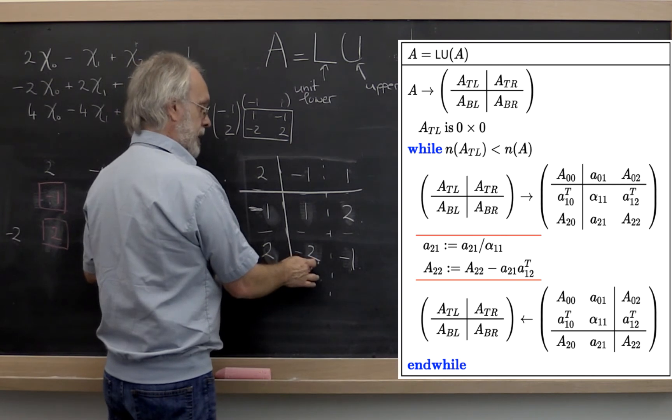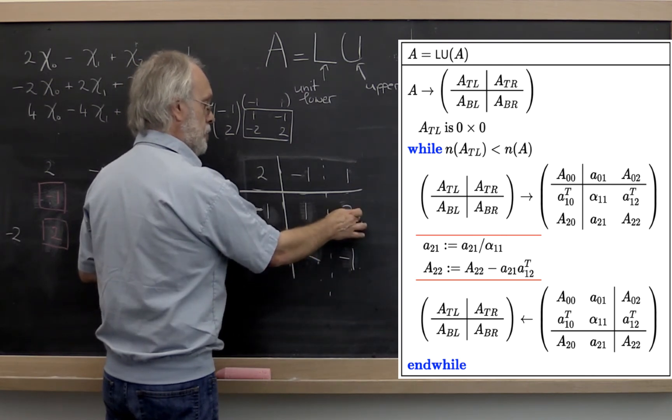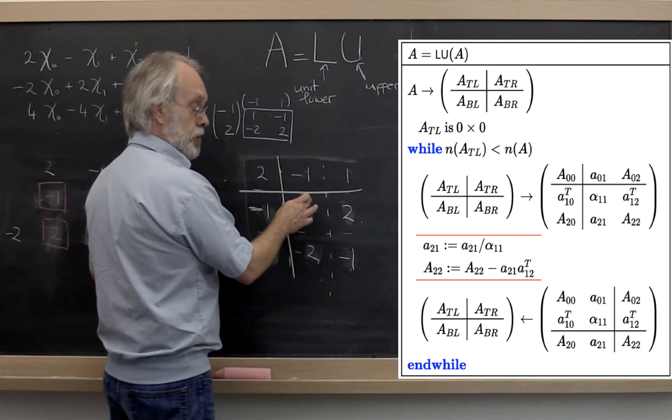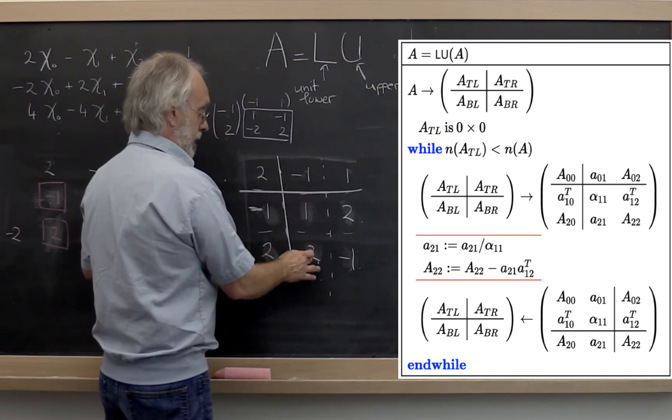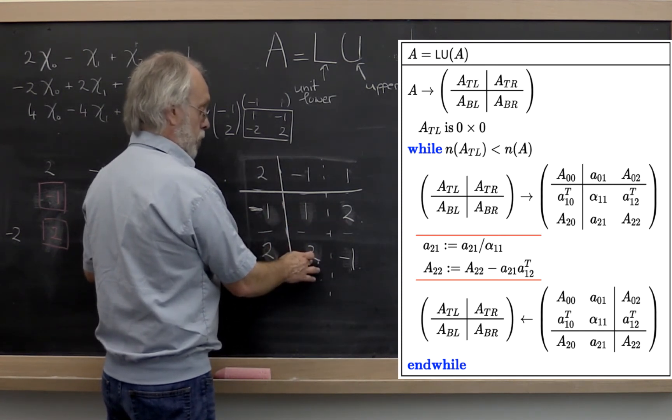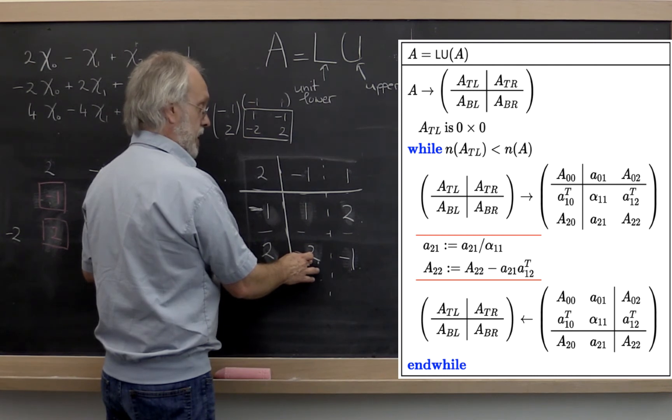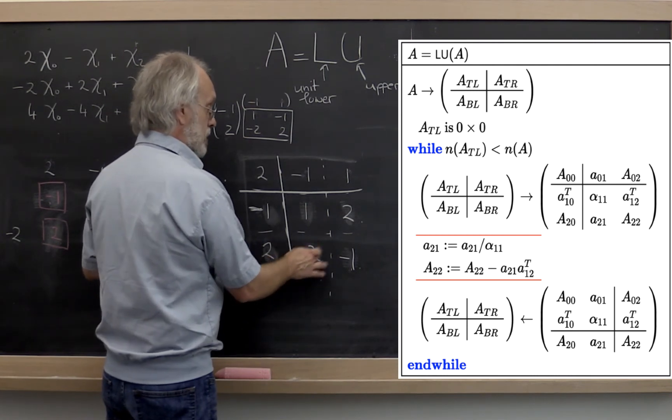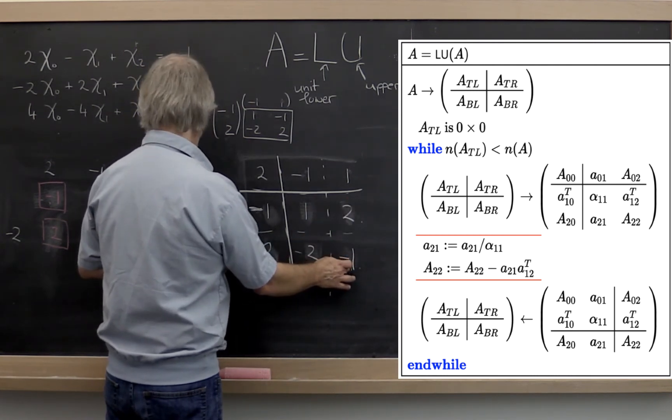This becomes your vector A 2,1, A 1,2 transpose, A 2,2. The algorithm tells you to take this and divide it into that, so that of course just leaves you with minus 2.